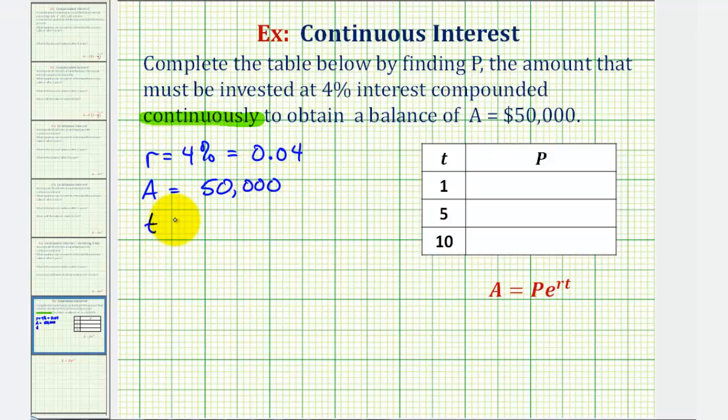And then the time T is going to change based upon the information from the table. It'll be either one year, five years, or ten years. And again, we're trying to find P, the initial amount, for these values of T.